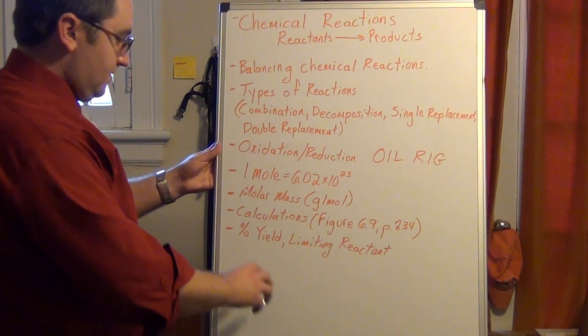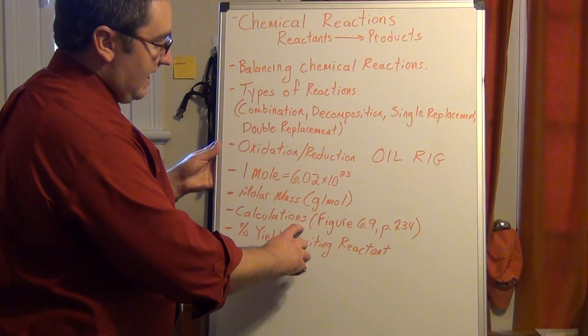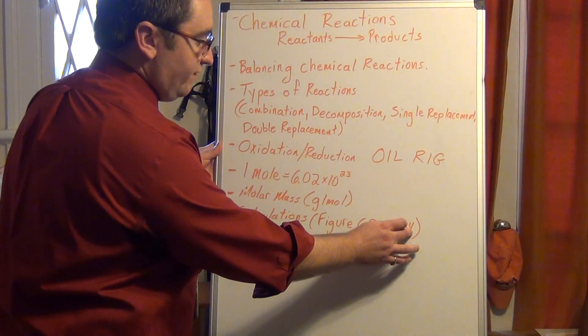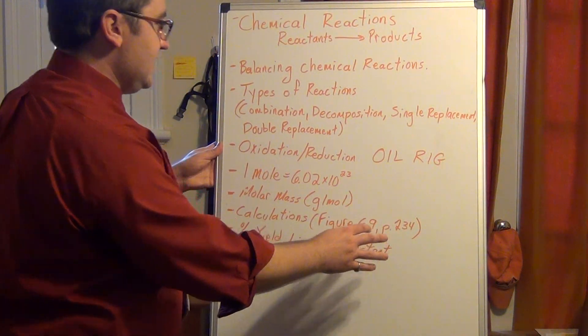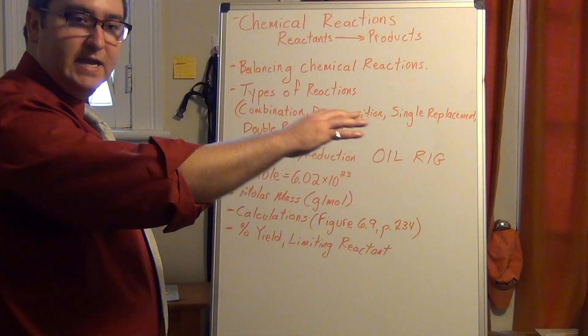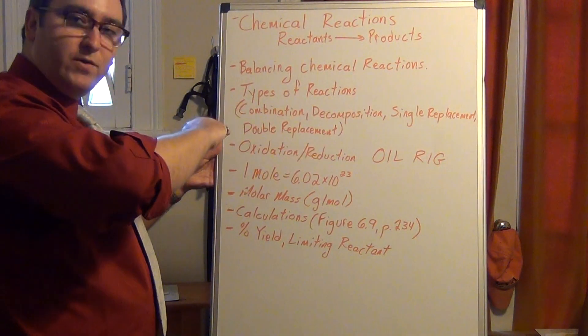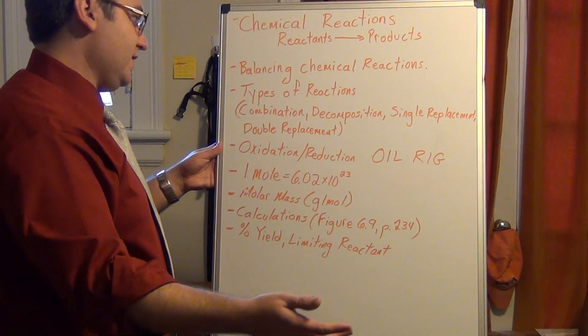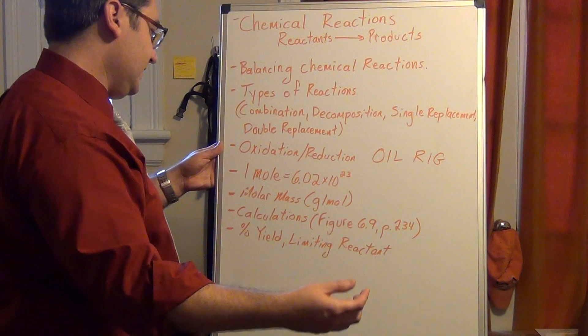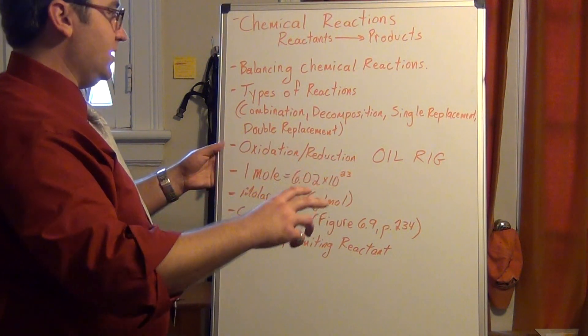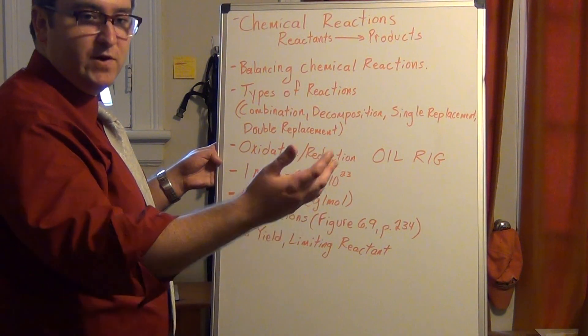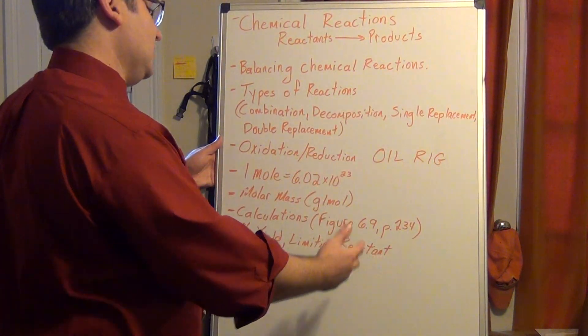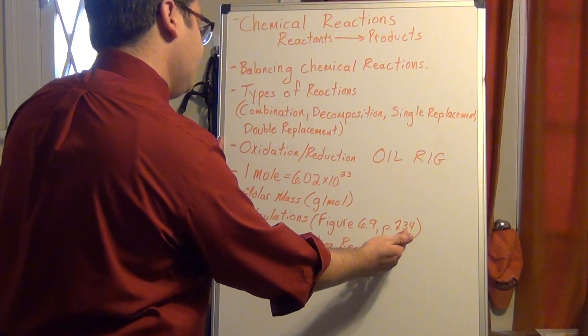There's going to be numerous calculations within this chapter. I find that there's a really nice flow chart that's on page 234, figure 6.9, telling you how to get between moles. Anytime you're going moles to moles, you're going to be using the coefficients or the subscripts within a chemical reaction or within a molecule. Anytime you're going between moles and grams, you want to use your molar mass. If you're going from atoms to elements, you want to use Avogadro's number.